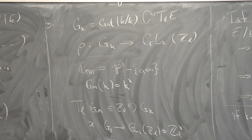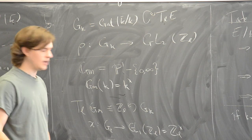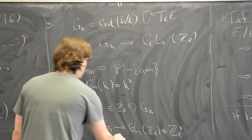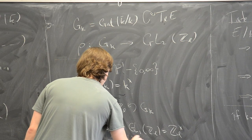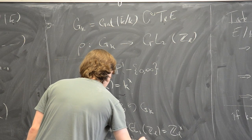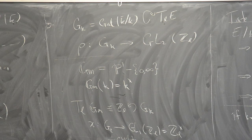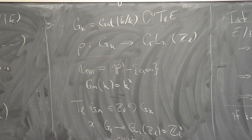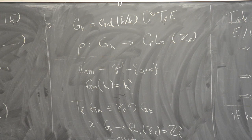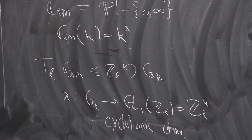There's a close relationship between the Tate module and the cyclotomic character, and that comes from the Weil pairing, which I'll now tell you about.